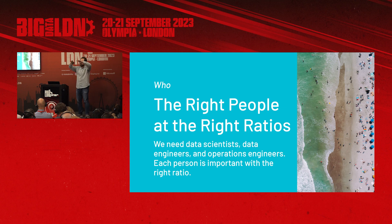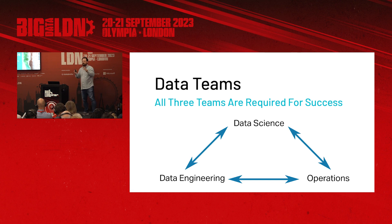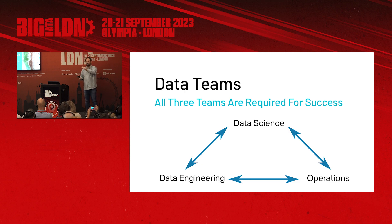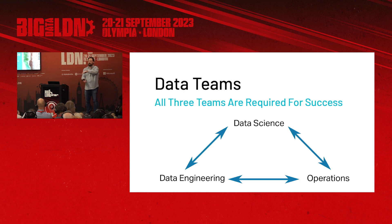When we look at a data team, sometimes companies think it means data scientists, or they think it's data analysts. But data teams encompass several different people, several different personalities, all at the right ratios. We need data scientists. But if we have 10 data scientists to one data engineer, you know what happens? Problems. That's an entire failure prototype right there.